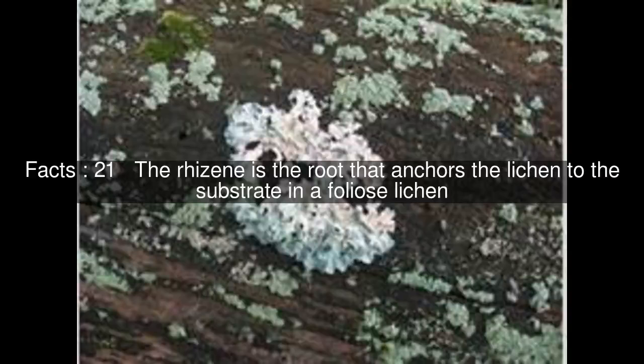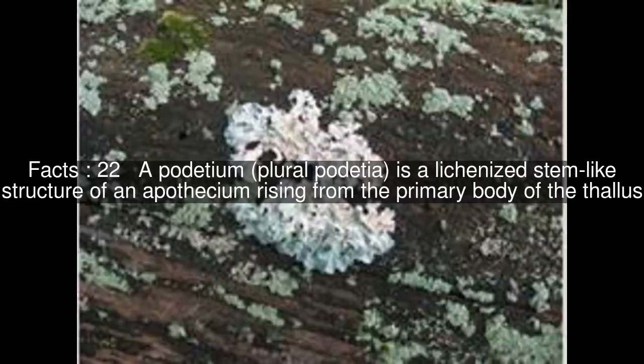The rhizine is the root that anchors the lichen to the substrate in a foliose lichen. A podetium (plural podetia) is a lichenized stem-like structure of an apothecium rising from the primary body of the thallus. Since it is part of the reproductive tissue, it is not considered part of the thallus.